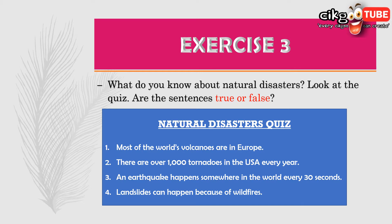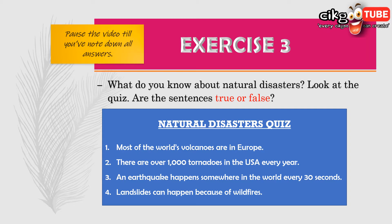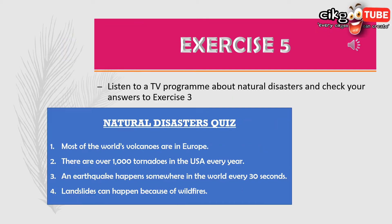An earthquake happens somewhere in the world every 30 seconds, and landslides can happen because of wildfires. Decide which is true or false — pause the video until you have all your answers, then resume. Now let's listen to a TV program about natural disasters and check your answers to Exercise 3.